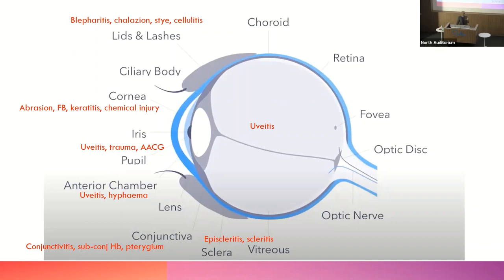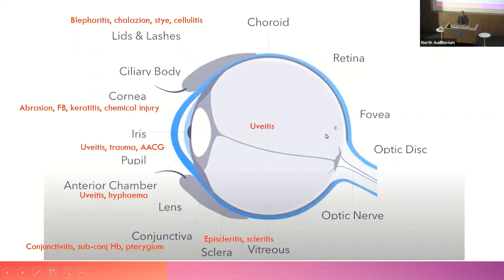Episcleritis and scleritis are inflammation of layers underneath the conjunctiva — conjunctiva, episclera, and then sclera. Finally, if you've got cells within the vitreous, the commonest cause is uveitis — inflammation of the uveal tract. Patients with vitreous cells will present with floaters, as cells float in front of the fovea. Floaters can occur when there are cells anywhere along the optical axis — most commonly the anterior chamber or the vitreous.